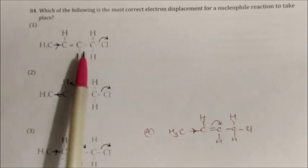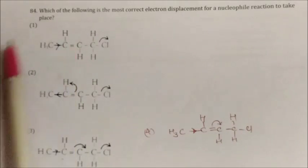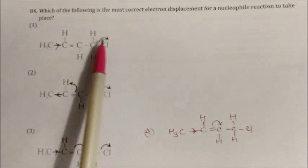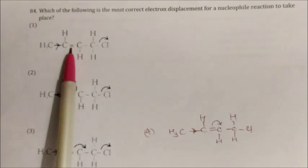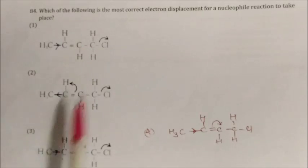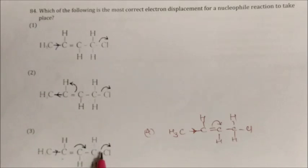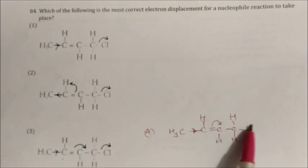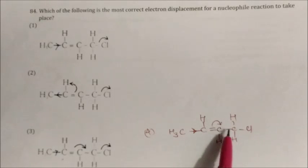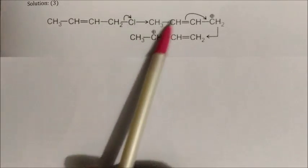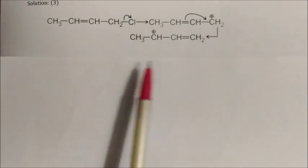Question: Which represents the most correct electron displacement for a nucleophilic reaction? CH3 is electron donating. When Cl leaves during substitution, a positive charge forms and is stabilized by pi electron shift. Option where Cl leaves and pi electrons shift toward the carbocation is the correct representation. The arrow showing pi electron displacement toward the positive carbon when Cl departs is correct. Answer: option 3.